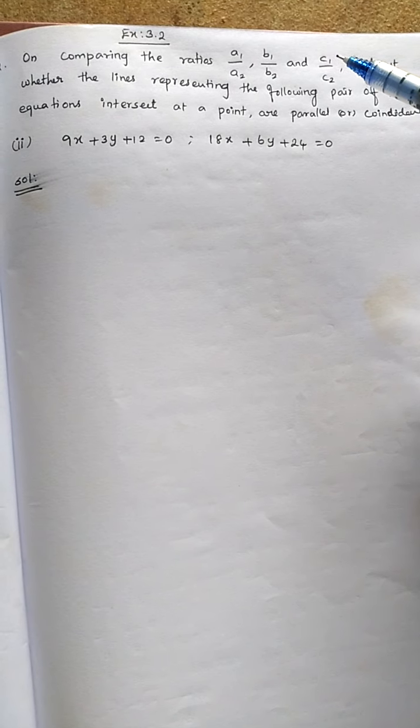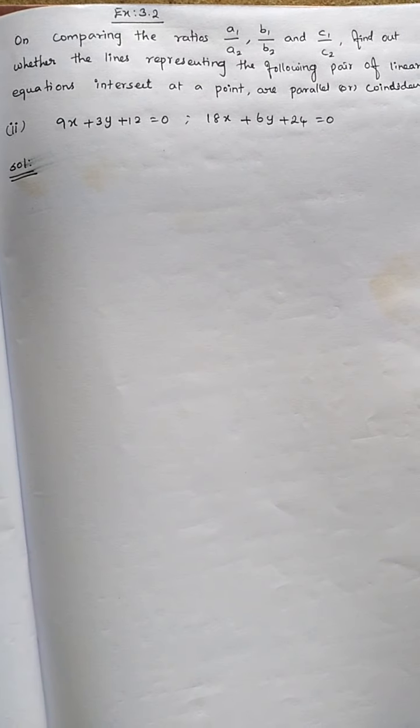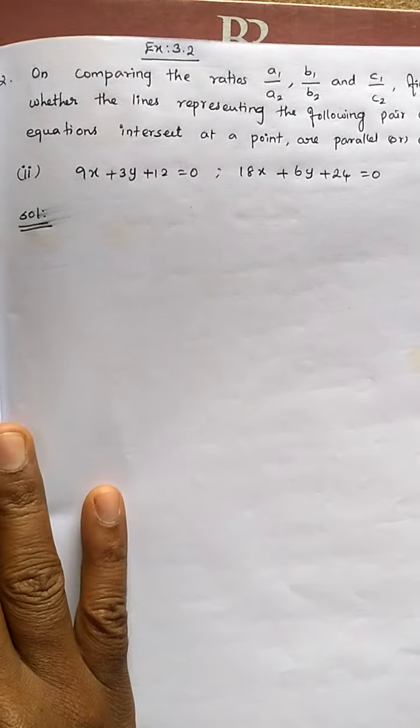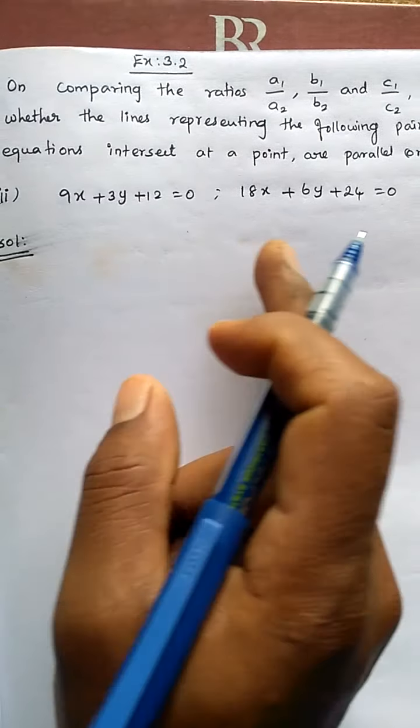Using these ratios, we have to find out whether the equations represent intersecting lines, parallel lines, or coincident lines. Before that, let's compare the given equations with the standard form, then we will find out a1, a2, b1, b2, c1, c2 values, and then we can say what kind of lines they are.